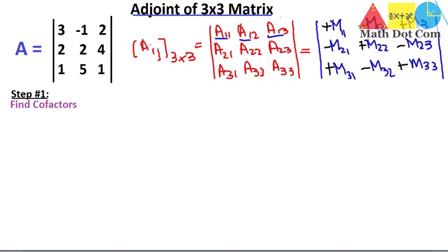Now let's see how to find the minors. I have also discussed in previous lectures how to find minors, and we will write it in detail again here, finding M11, M12, M13 and so on one by one. We will start with M11, put those values into the cofactor matrix, and then carry on. This is step one: finding the cofactors.